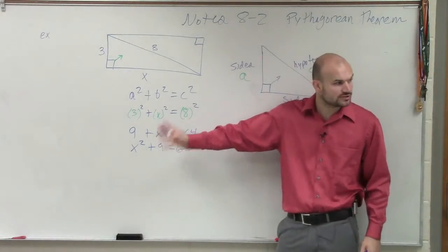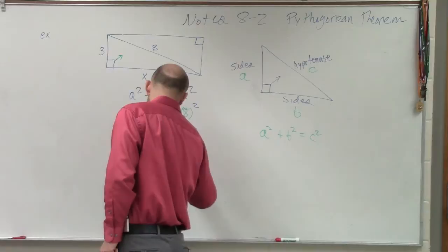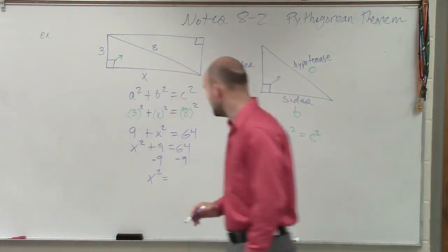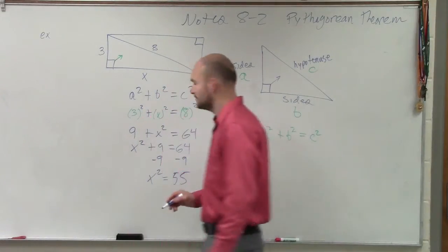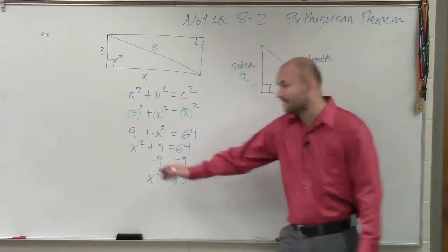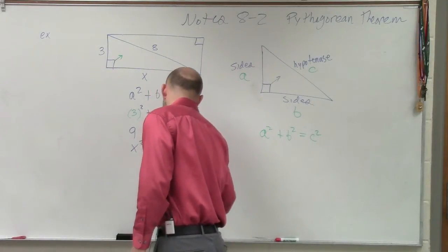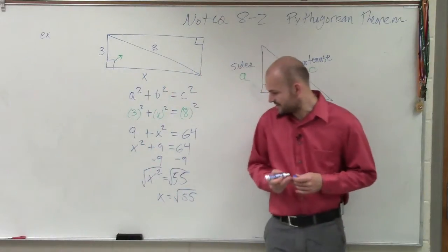So before you square root, you have to undo addition and subtraction first. So I subtract the nine. x squared equals, that's going to be 55. Very close to my last answer, right? Now we take the square root, and you could say x equals the square root of 55. And I believe that's going to be the simplified answer.